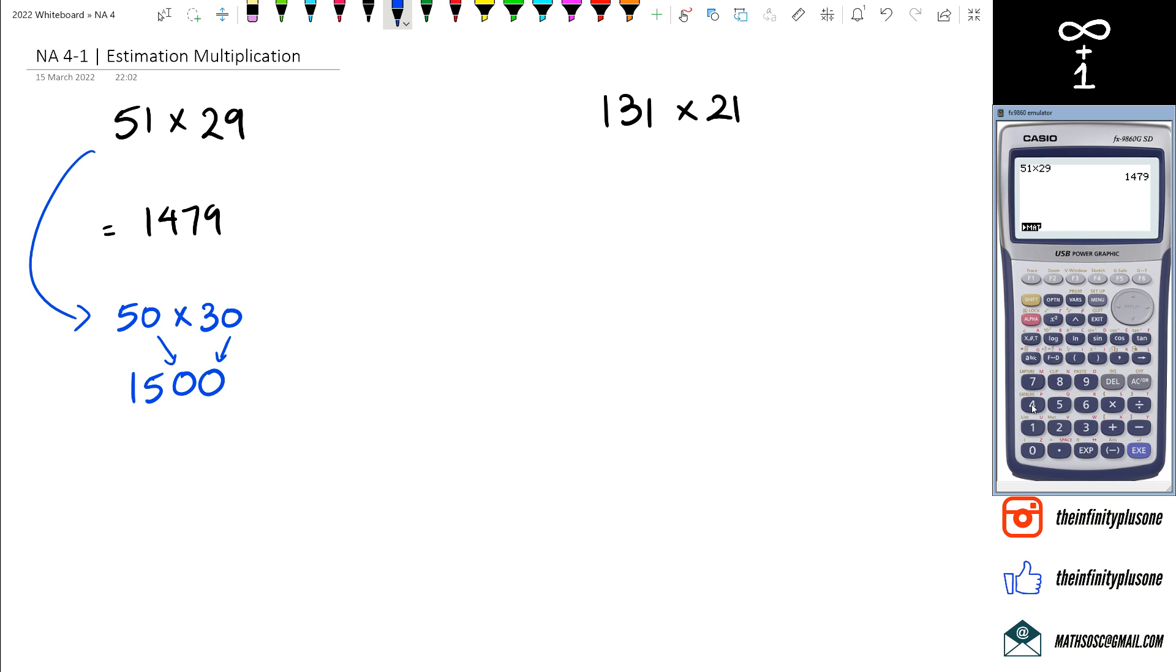What about 131 times 21? Let's put that in the calculator and see what we get. So 131 times 21, we've got 2751 - that's our accurate answer.